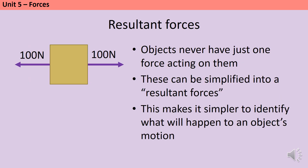Objects never have just one force acting on them, but trying to take account of all of the different forces can get pretty complicated, and often we don't really need to. Usually, we're just interested in what is going to happen to the motion of an object — is it going to change the way it moves, or is it going to stay the same? And for that, all we need is something called the resultant force.